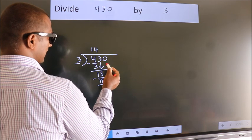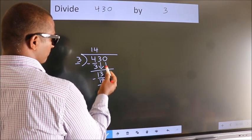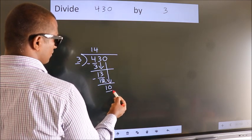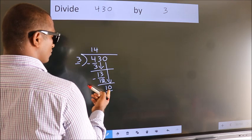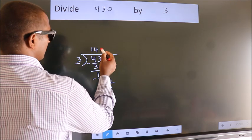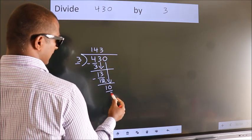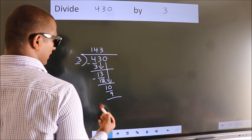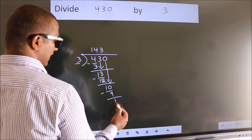After this, bring down the beside number. So, 0 down. So, 10. A number close to 10 in 3 table is 3 threes 9. Now, we subtract. We get 1.